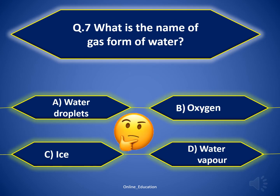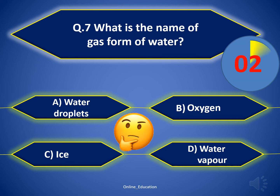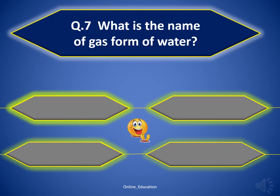Question 7. What is the name of the gas form of water? The correct answer is Option D — Water vapor. Good job!